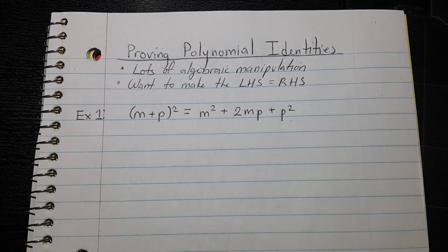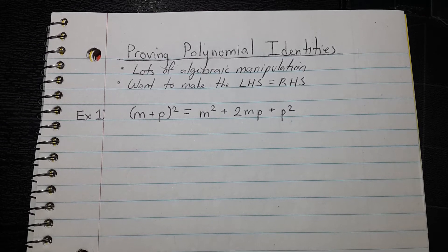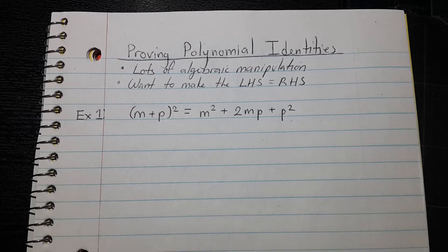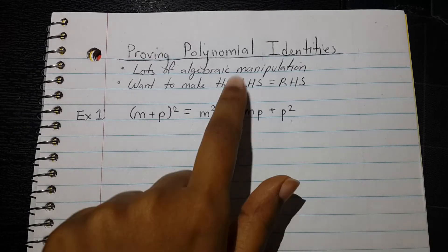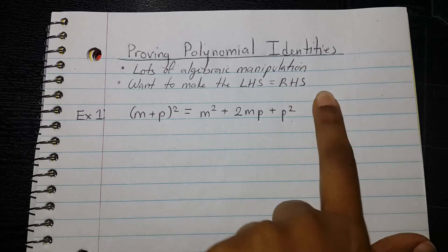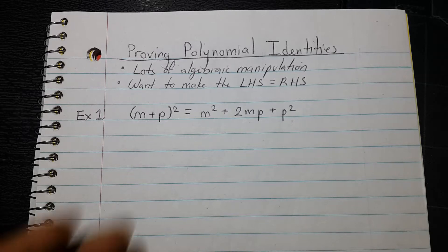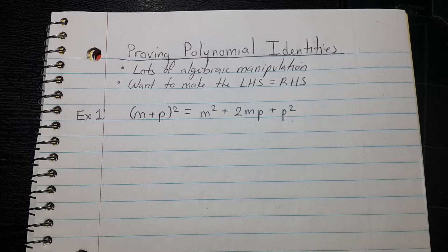Hey, everyone. Today we're covering how to prove polynomial identities. There's going to be a lot of algebraic manipulation, and you essentially want to show that the left-hand side of the equation — LHS for short — is equal to the right-hand side. There are going to be times where you're going to manipulate one side, or you're going to have to manipulate both, and we're going to look at both cases.